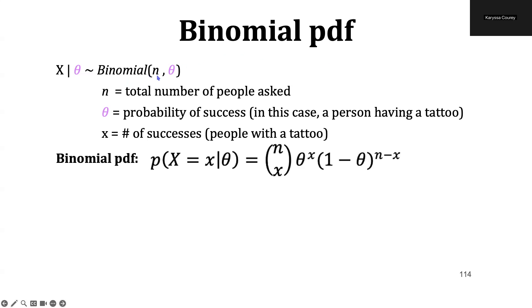The binomial distribution takes n, which is the total number of people that we'd ask, theta, which is the probability of success, or in other words, the probability that somebody has a tattoo, and x would be the number of people with a tattoo. So here is our binomial PDF, and so it gives us the probability of obtaining x number of successes if there are n total people that are asked, and a probability of theta of somebody having a tattoo.